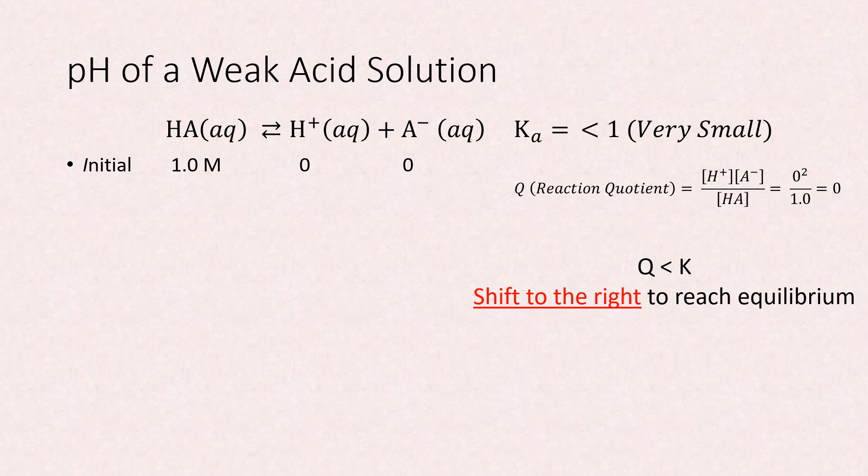The change in concentration is negative 1x for HA because a shift to the right means that HA will be lost. 1x comes from the coefficient stoichiometry in the balanced equation.